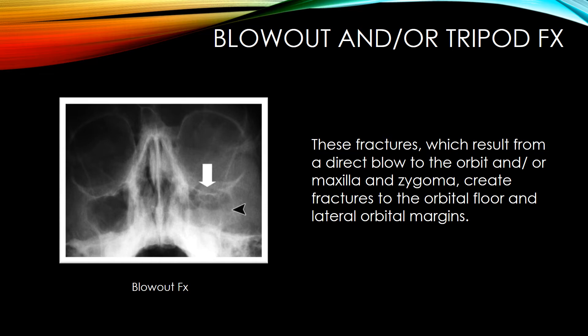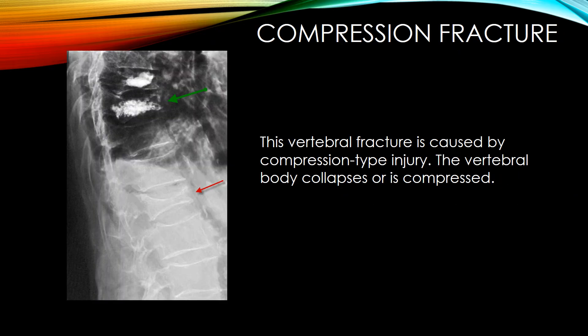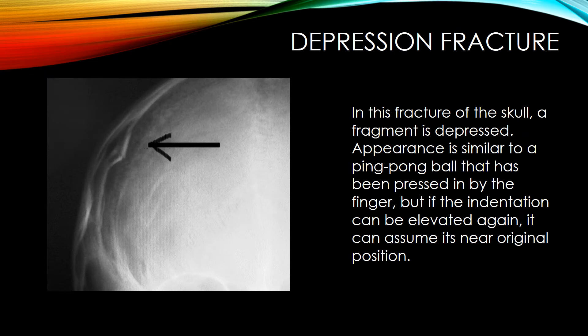Blowout and/or tripod fractures result from a direct blow to the orbit and/or maxilla and zygoma, creating fractures to the orbital floor and lateral orbital margins. A compression fracture is a vertebral fracture caused by a compression-type injury where the vertebral body collapses or is compressed. A depression fracture of the skull involves a depressed fragment — its appearance is similar to a ping pong ball pressed in by a finger, but if the indentation can be elevated again, it can assume its near original position.